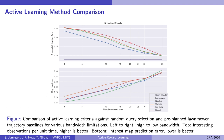Our simulation results indicate that the regret-based active learning criterion, shown as the red line, is best for maximizing the number of interesting observations that a robot collects in a mission, despite the fact that the uncertainty reduction method does a better job of predicting the operator's interests.